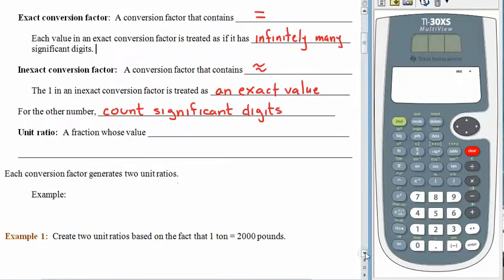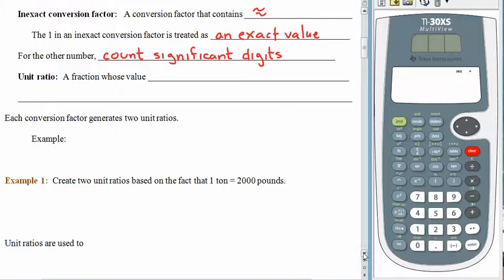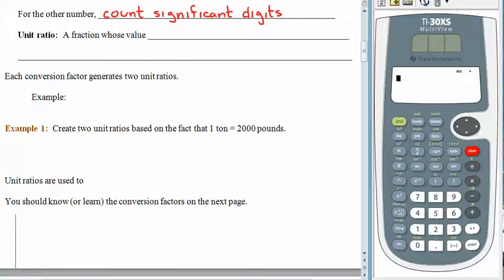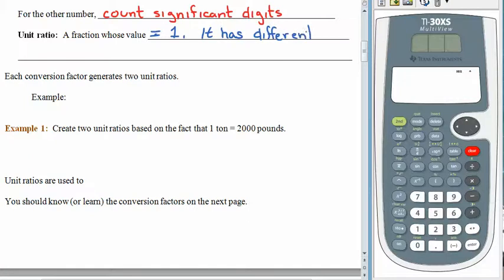The key to doing all of these unit conversions are unit ratios. A unit ratio is a fraction — a special kind of fraction because the value is equal to 1. What makes it interesting is that it has a different unit in the numerator than it does in the denominator.